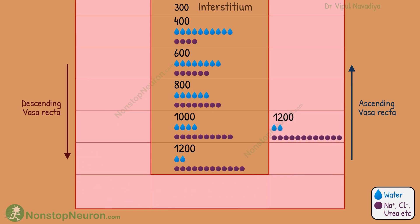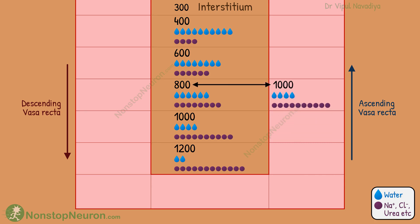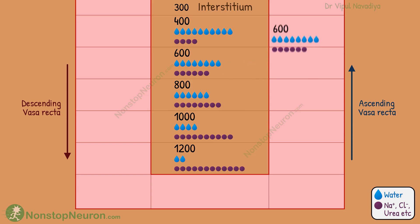Now the blood takes a turn and starts ascending. This time, the osmolarity in the interstitium is lower than that in plasma. So now the water starts entering the capillary and solutes start leaving it, so the osmolarity of plasma falls. In the next block, it faces further decreased osmolarity, so it again takes up water and loses the solutes, causing a further fall in osmolarity. This continues as the blood keeps ascending towards the cortex. In the end, its osmolarity is slightly more than 300.